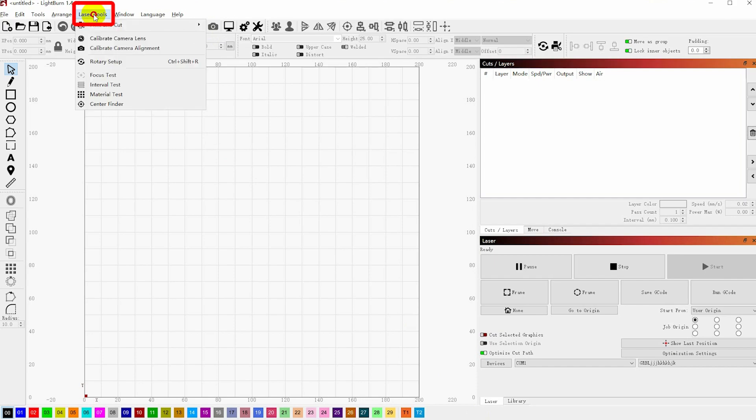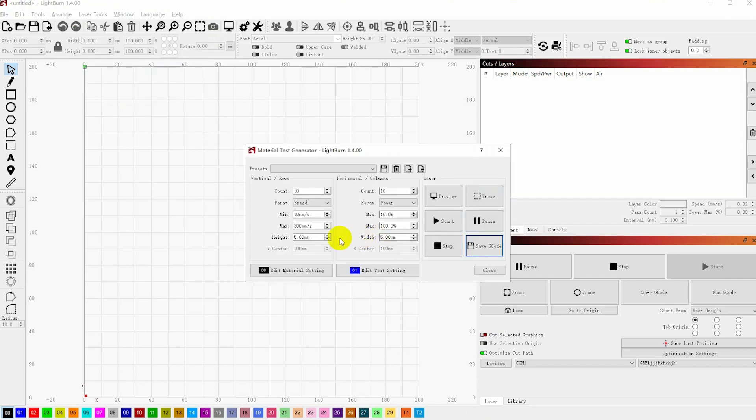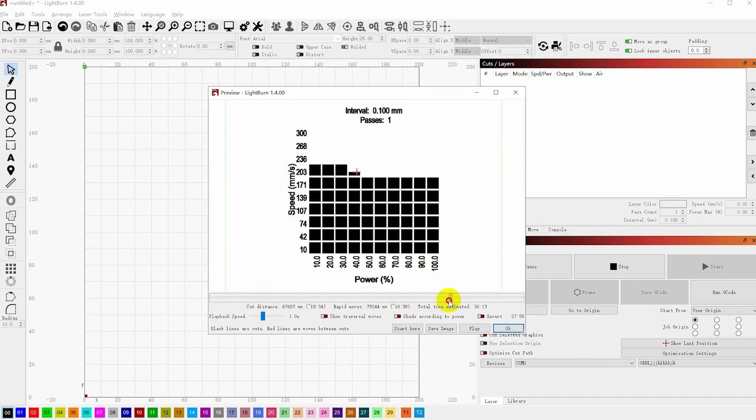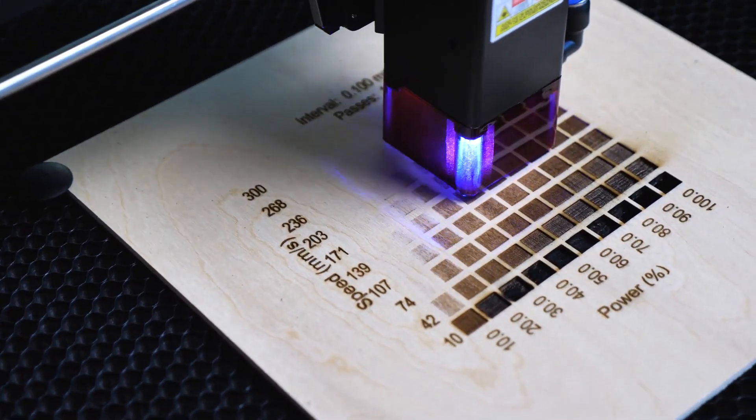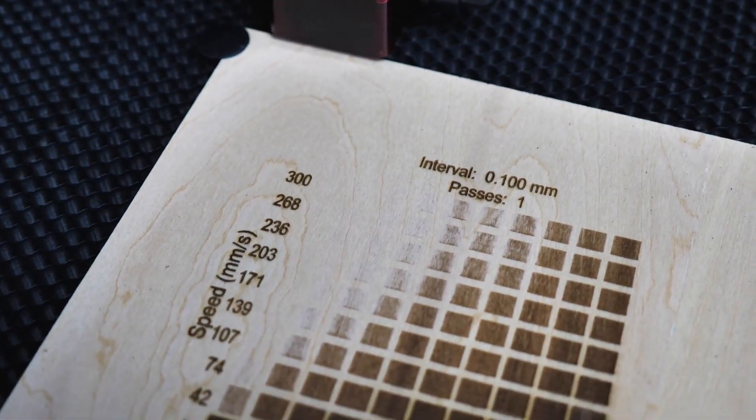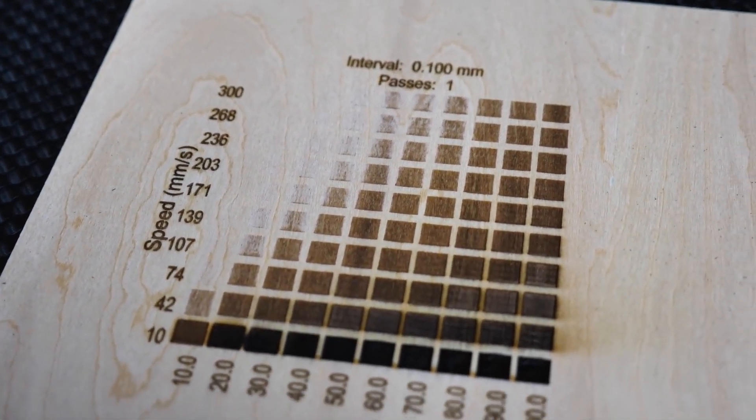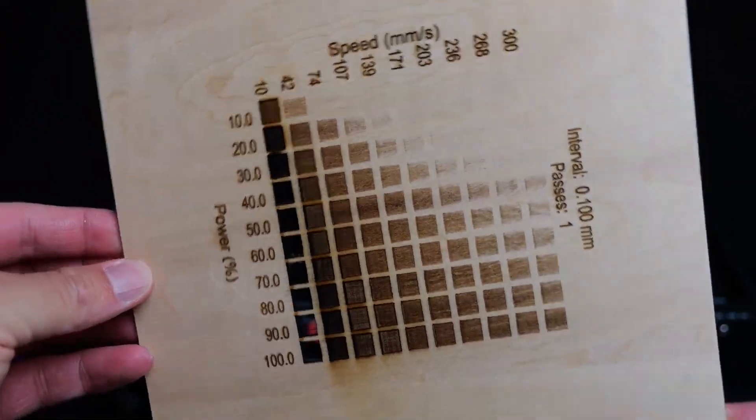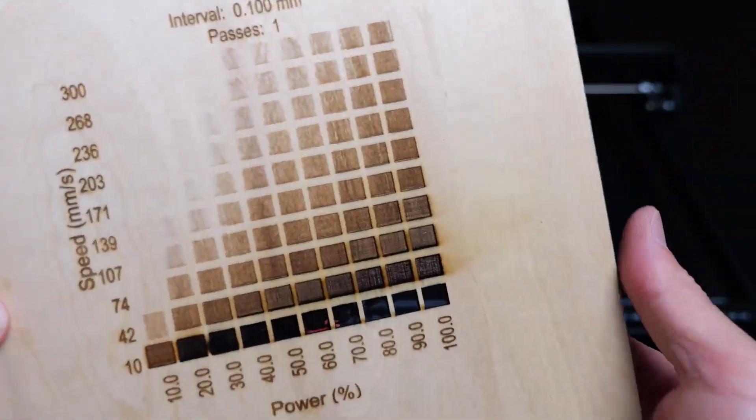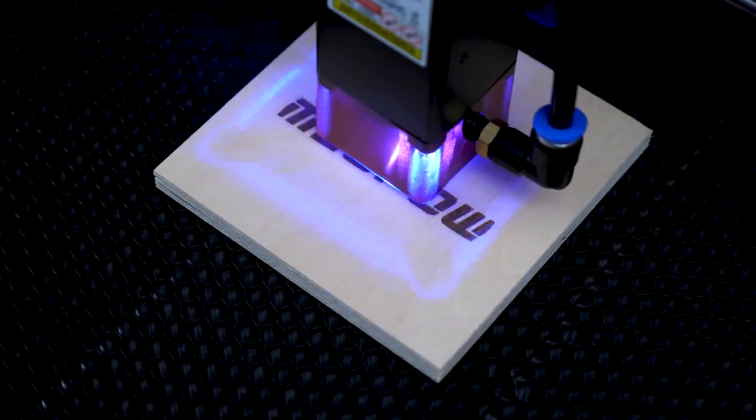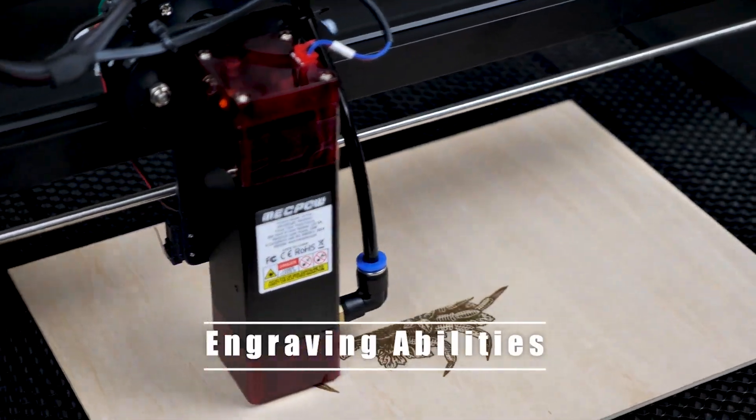To achieve the best results when engraving or cutting different materials, it's always a good idea to perform a material test first. I absolutely like this feature in LightBurn because it helps prevent over-burning or under-burning. Let's use wood as an example. When the speed is below 17mm per second, results aren't as impressive. In fact, you can even see the laser burning through the material, which is definitely not what I want. So I have the option to avoid using that speed and power combination.